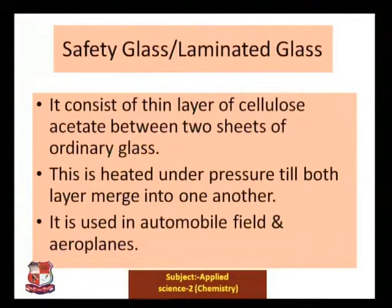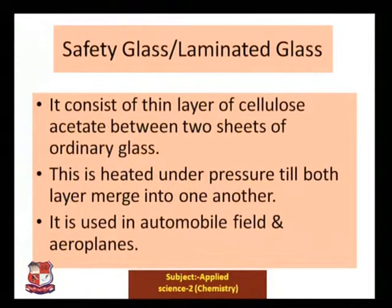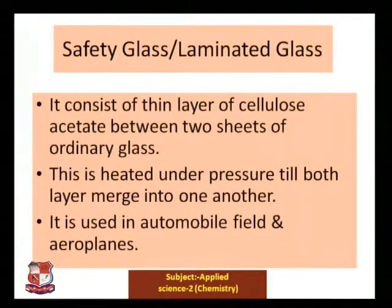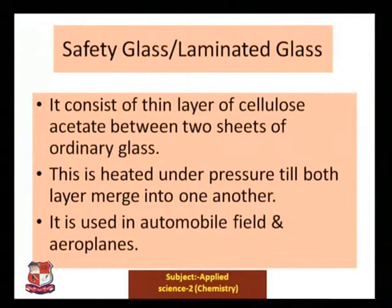Safety glass, also called laminated glass, is formed by placing a thin layer of cellulose acetate between two sheets of ordinary glass. This is heated under pressure until both layers merge into one. The resulting glass is used in automobiles and aeroplanes. Due to its three-layered protection, when it breaks it does not shatter, helping to avoid accidents.